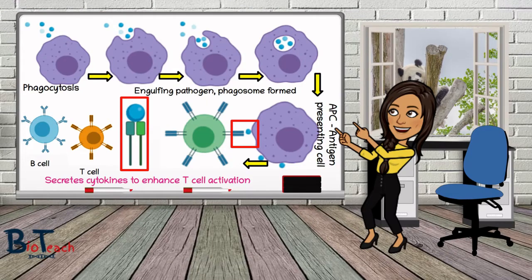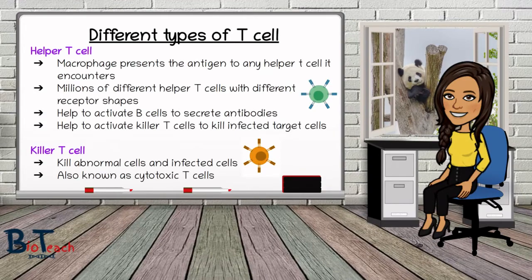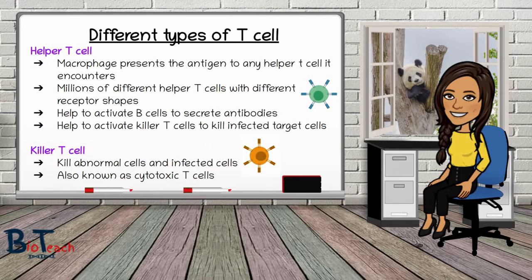There are two different types of T-cells you need to know about: helper T-cells and killer T-cells, also called cytotoxic T-cells — they're the same thing. The helper T-cell has a receptor in its membrane called the T-cell receptor, which is a protein with a specific shape. If the antigen on the macrophage matches the T-cell receptor on the helper T-cell, it becomes an active T-cell. There are literally millions of different T-helper cells with different receptor shapes, and only when the macrophage finds the specific appropriate one will the process continue.